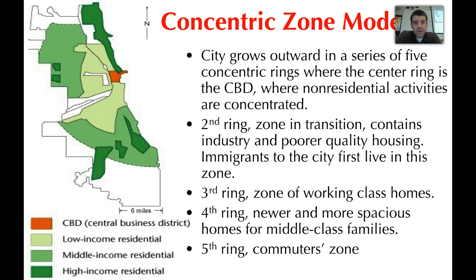In the third ring, we have the working class zone. These tend to be marked by smaller homes and more densely populated neighborhoods. Yards tend to be small, families tend to be smaller. These tend to be younger couples who commute into the CBD or work in the area, and oftentimes single young people as well.